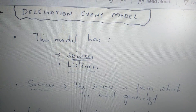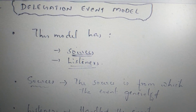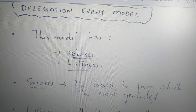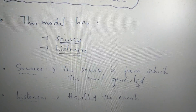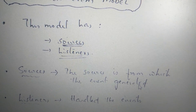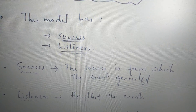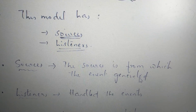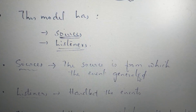In the delegation event model, there are two objects: one source and two listeners. The source is from which the events are generated. Listeners are generated by the event. If we click on the event, we will type in the source.